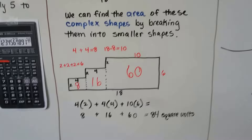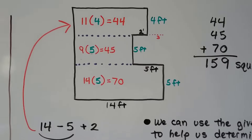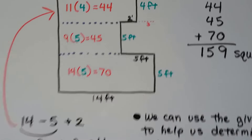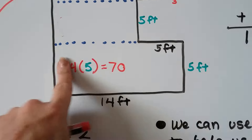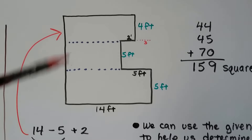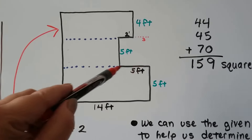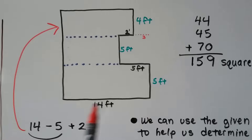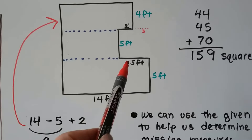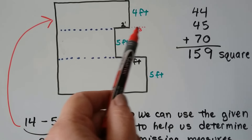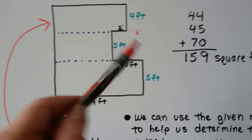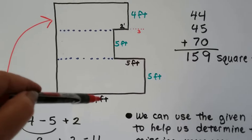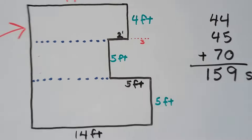Let's do one that's a little bit harder. We've got this weird shape and the top is not as long as the bottom. The bottom is 14 feet, this is 5 feet, this is 5 feet, this is 5 feet, that's 2 feet and that's 4 feet. The only difference between the bottom piece and the top piece is: if that's 5 feet and that's 2 feet, then that must be 3 feet here. So the top must be 11 because 14 take away 3 is 11.